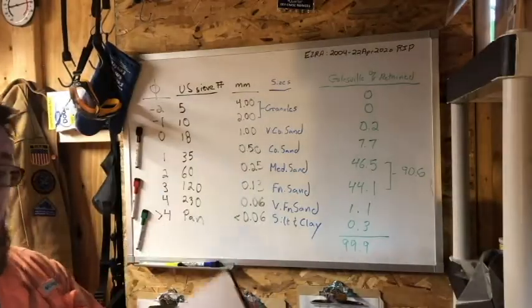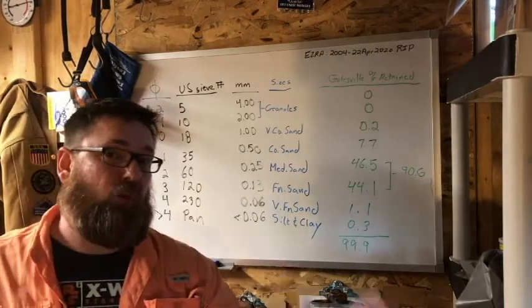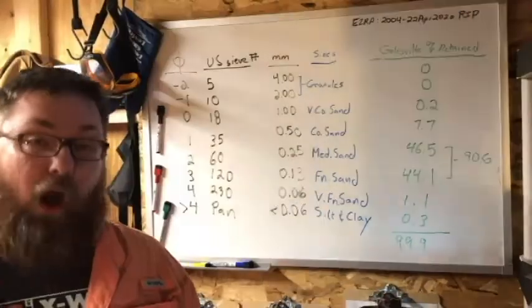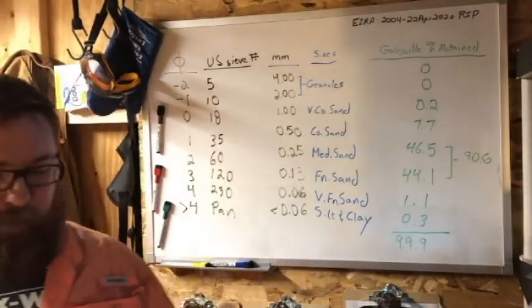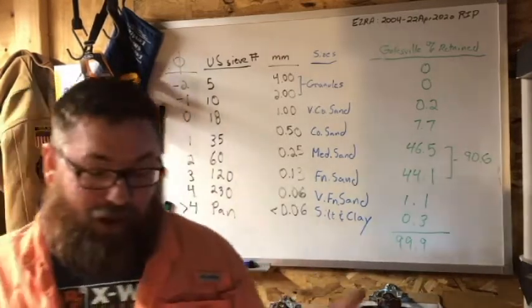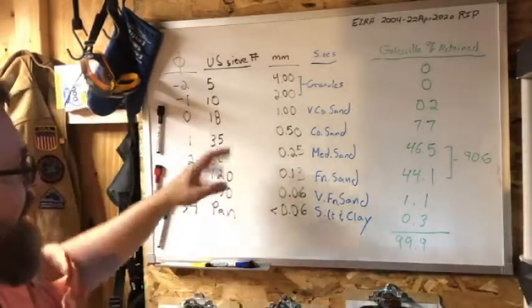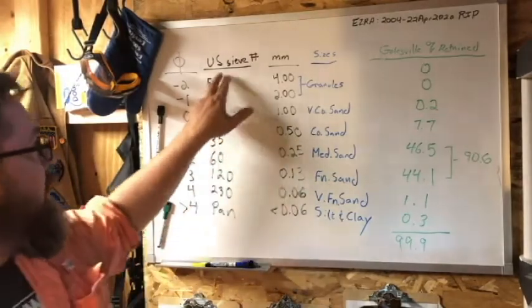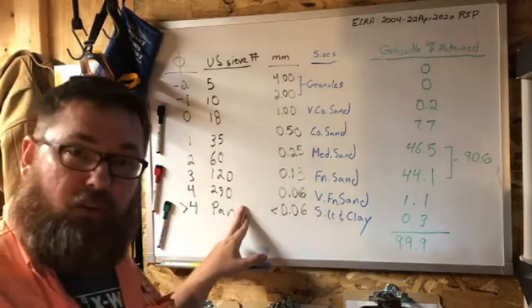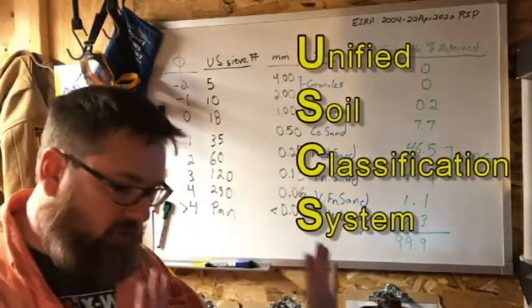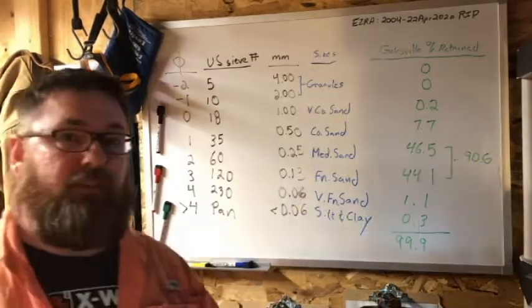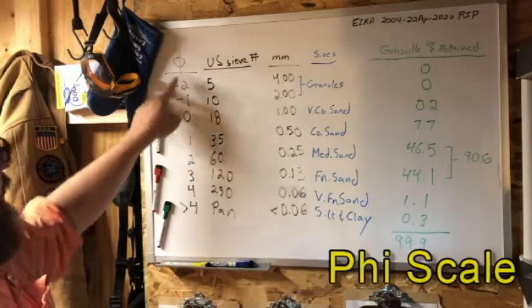That means in geology we call that well-sorted, which in engineering USCS is the exact opposite of well-graded. That's the problem—I'm speaking from a geology standpoint, not civil engineering. The sieve sizes I use are U.S. sieve numbers. They're totally different than an engineer would use because the engineering USCS system is based on industry standards, whereas here we base it on the Phi scale.